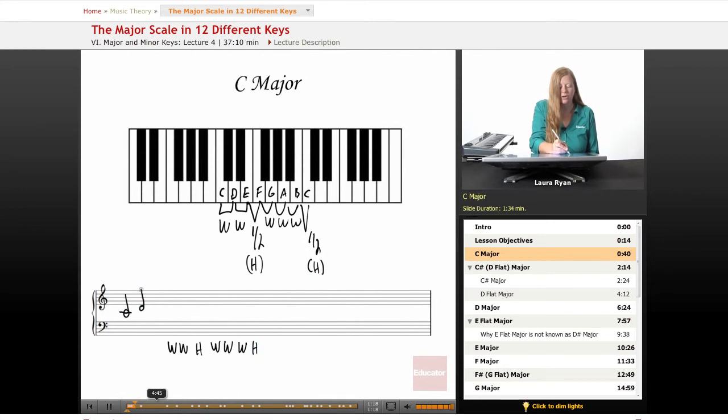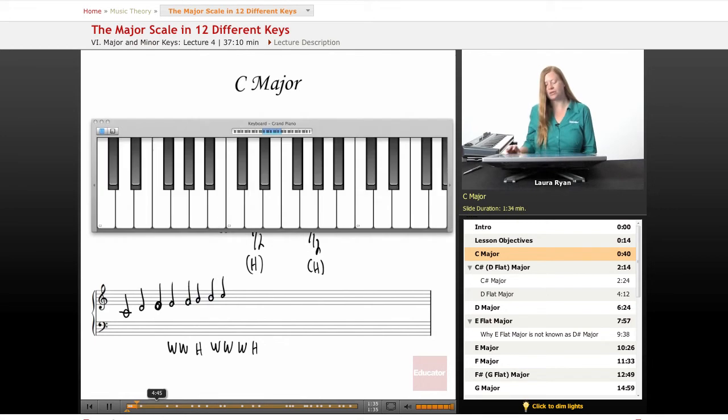Let's begin with middle C and copy what we have identified on the keyboard: C, D, E, F, G, A, B, C. Let's listen and really look at the intervals. C to D is a whole step because there's this little black key in between the two of them. D to E whole step, E to F half, F to G whole, G to A whole, A to B whole, B to C half. C major, done.